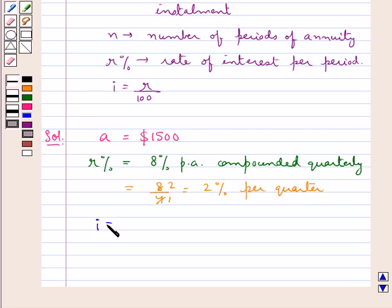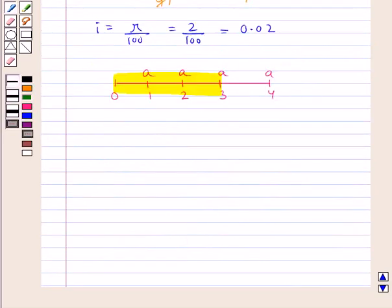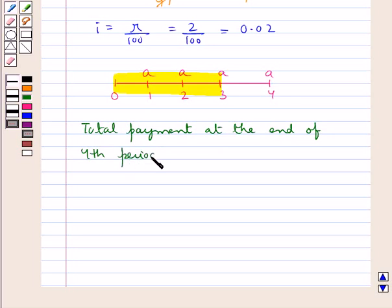This is equal to 8/4 which is equal to 2% per quarter. And now i would be equal to R/100, that is equal to 2/100 which is equal to 0.02. Here Ram misses the first three installments. Now he will have to pay the amount of the first three missed installments along with the installment of the fourth period also. Thus, the total payment at the end of the fourth period would be the amount of annuity of 4 periods.